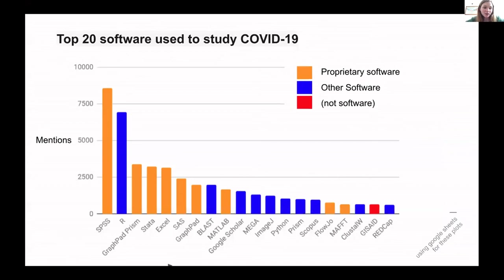We can investigate the top 20 software mentioned. Everything shown in orange is proprietary software and blue is non-proprietary software. Even looking at the top 20, we started to notice issues — some things were duplicated, for example MATLAB in uppercase and MATLAB in lowercase both featured in the top 20. And you can see in red that something that wasn't even software made it into the top 20 mentions, which illustrates the data quality challenges encountered.